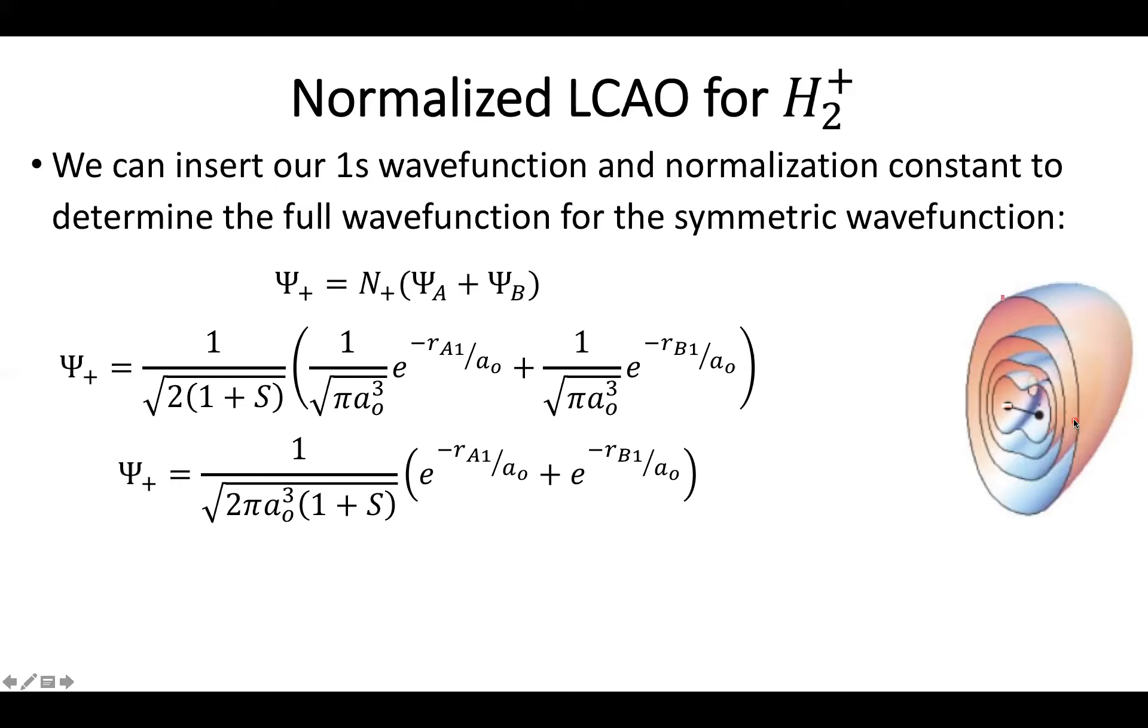Now you can do this same exact procedure for the anti-symmetric combination. Biggest notable difference is we now have introduced a negative term between these two functions. And this has some really profound consequences, as you have a positive wave function around atom A and then a negative wave function around atom B with exponential decays from each one.